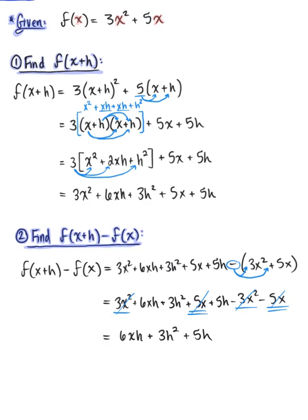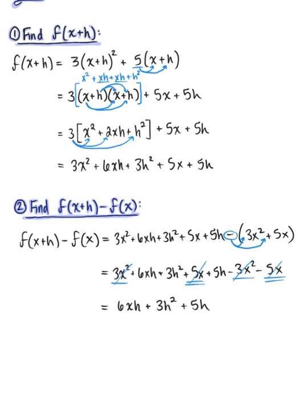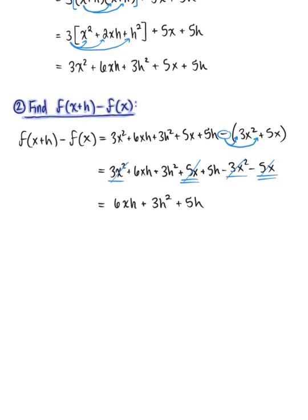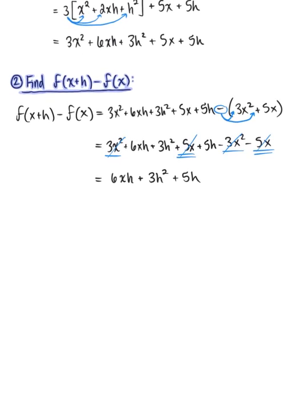We have one more step in our simplification process. We need to take this numerator and divide by h. Step three is to find the simplified difference quotient. We want to find f of x plus h minus f of x, which we just found in step two, and now divide by h.